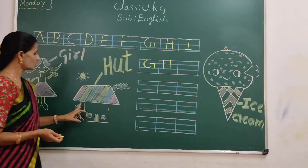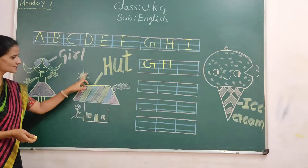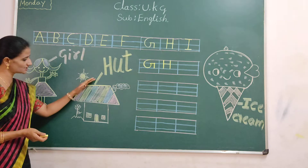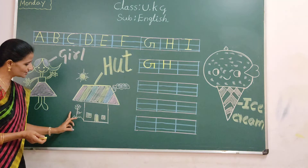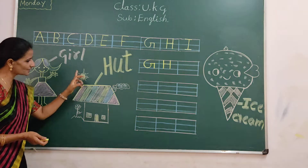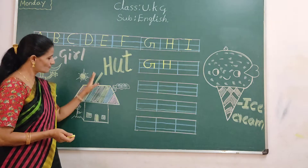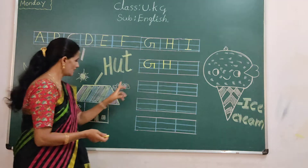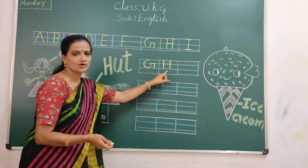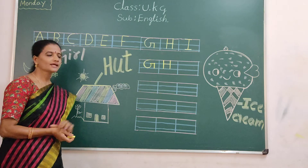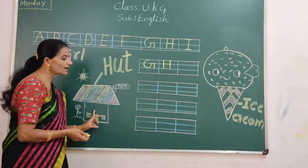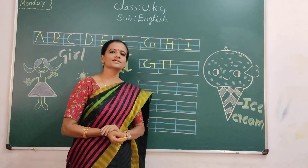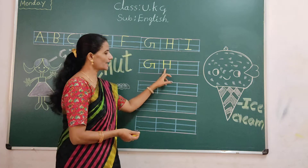H for heart. See here — what is this picture? Heart picture. See here — heart. H for heart. Say it only — H for heart. Everyone say and write the English letters. So H is finished.